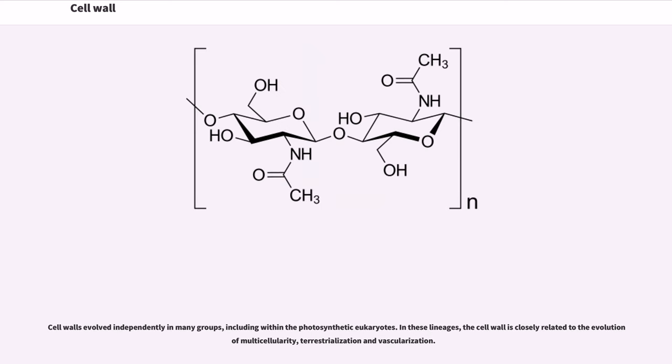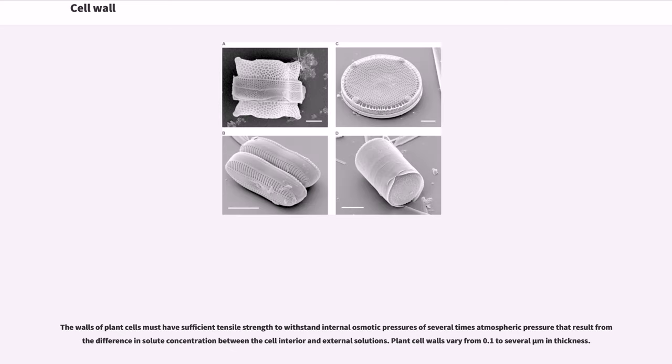Cell walls evolved independently in many groups, including within the photosynthetic eukaryotes. In these lineages, the cell wall is closely related to the evolution of multicellularity, terrestrialization and vascularization. The walls of plant cells must have sufficient tensile strength to withstand internal osmotic pressures of several times atmospheric pressure that result from difference in solute concentration between the cell interior and external solutions.